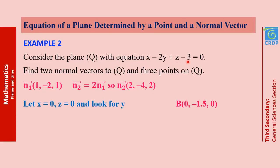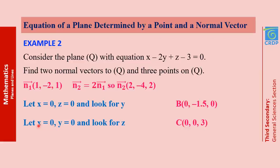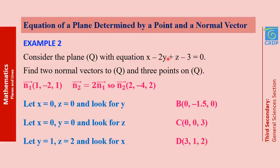To find points on a plane, we take values for any two of the three variables and solve for the third. For example, if x = 0 and z = 0, then y = −1.5, giving point B = (0, −1.5, 0). If x = 0 and y = 0, then z = 3, giving point (0, 0, 3). We can also take non-zero values: if y = 1 and z = 2, we get x = 3, giving point (3, 1, 2). Summary: to find normal vectors, use the Cartesian equation and multiply by any non-zero real; to find points, assign values to any two variables and solve for the third.